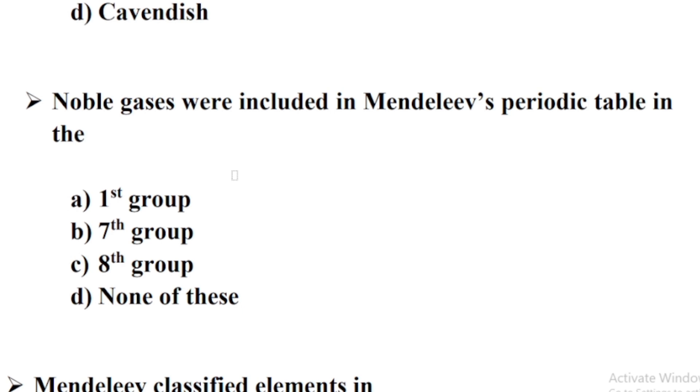Noble Gases were included in Mendeleev's periodic table in the — Option D: None of these.